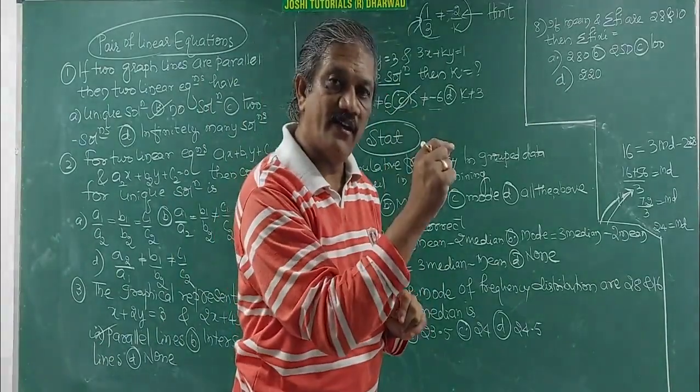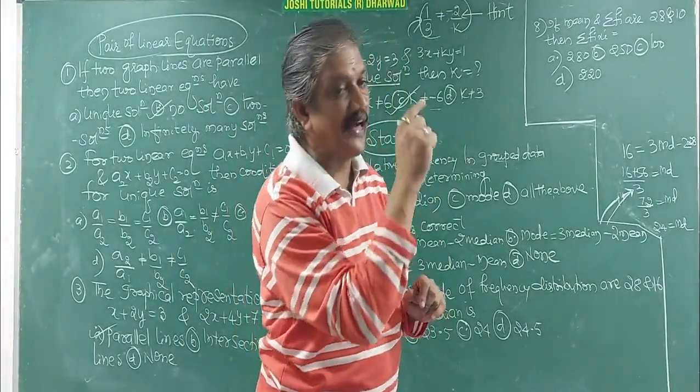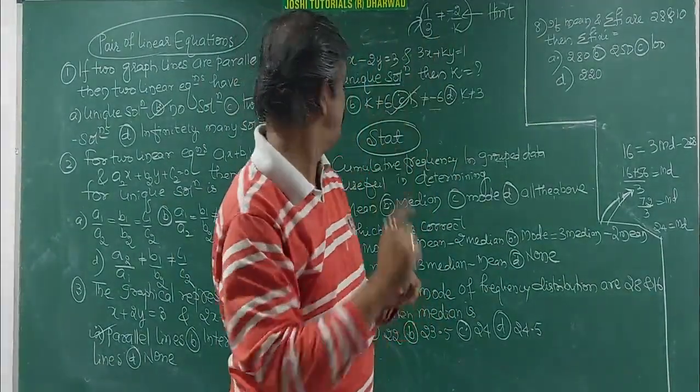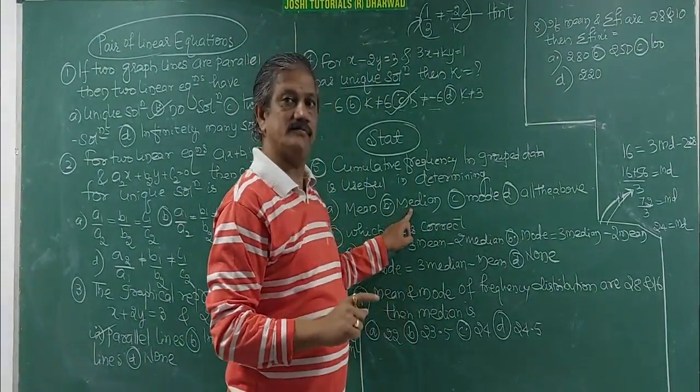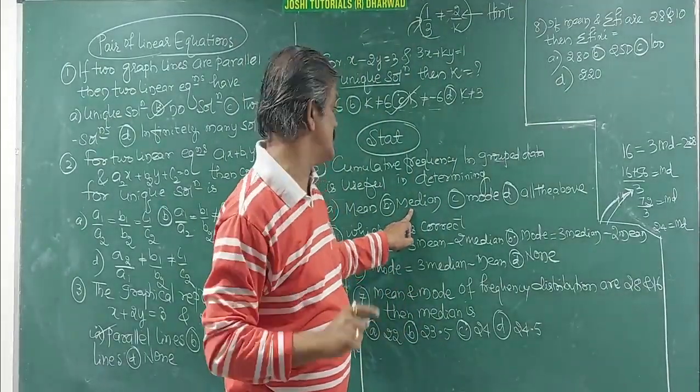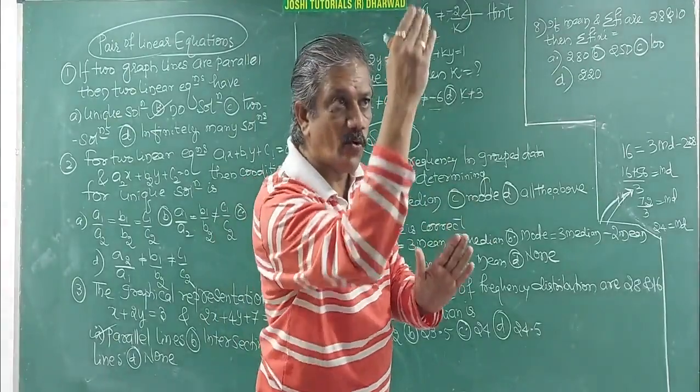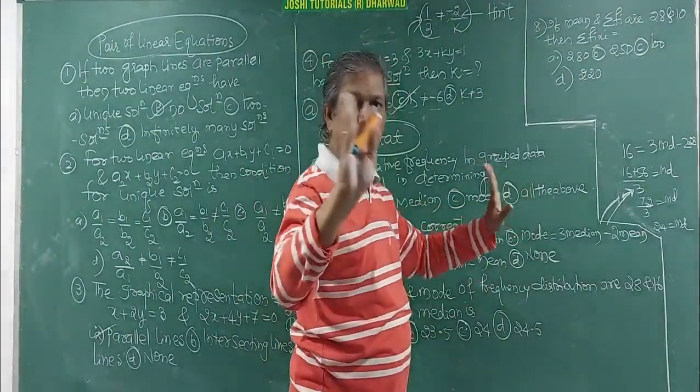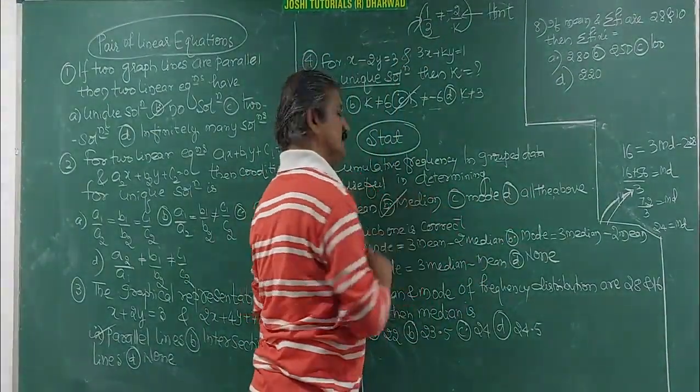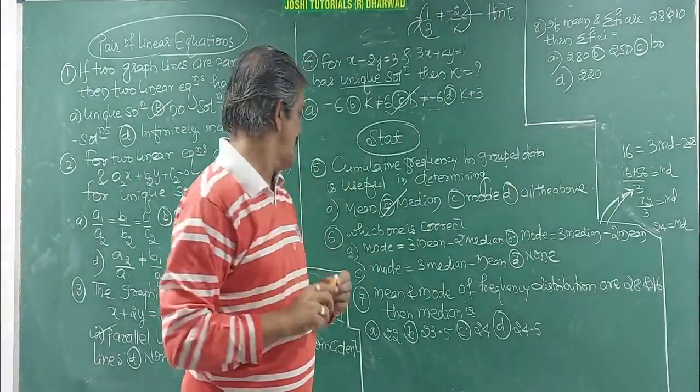Among these, mean, cumulative frequency will not happen. Then what we do? We have CI, XI, then FIXI. Median, we want cumulative frequency. Mode, we want only frequency. All the above, no chance. So it is B. So they may ask like this.